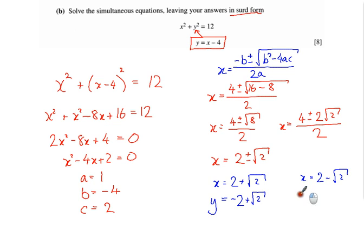Or if x is 2 minus root 2, my other solution for x, then y is equal to x take away 4. Well, 2 minus root 2 all take away 4 is minus 2 minus root 2. And now we have solved our simultaneous equations. We've got two sets of solutions.